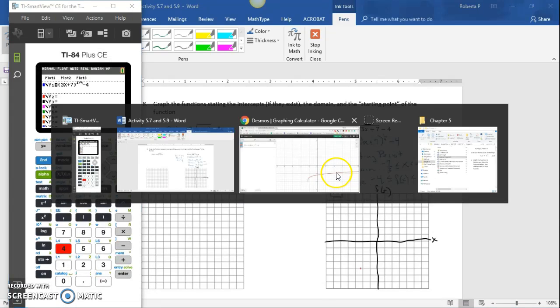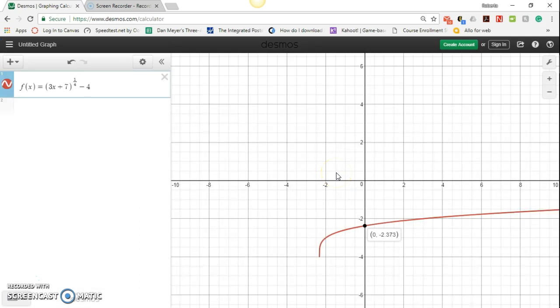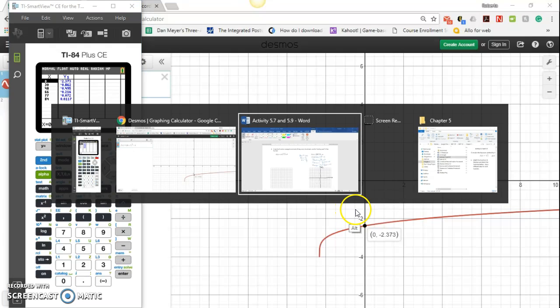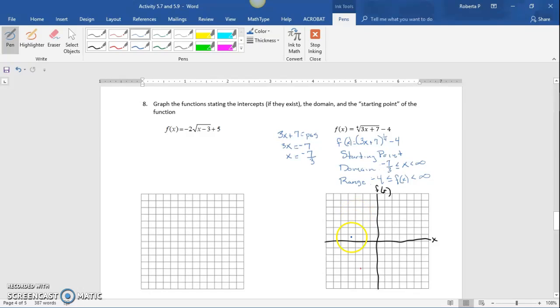Using Desmos, we can find the vertical intercept. If you're using a graphing calculator, go to your table and type in 0. You'll see it's negative 2.373.